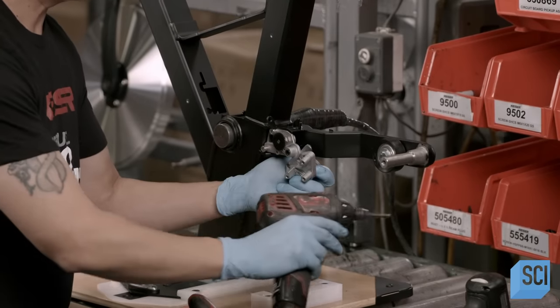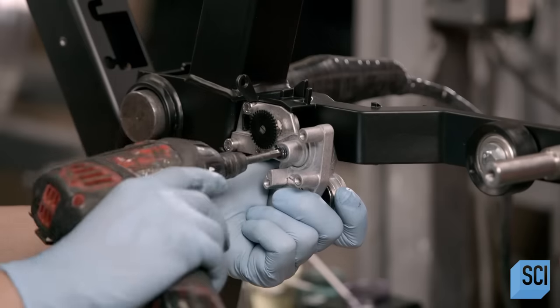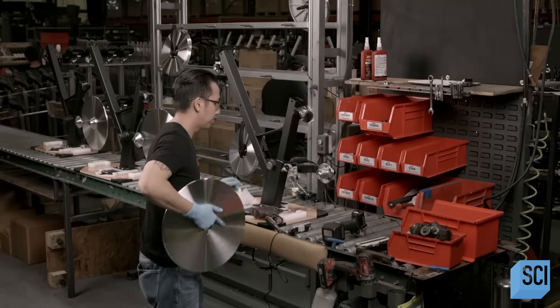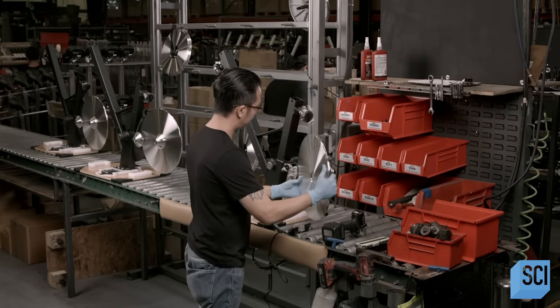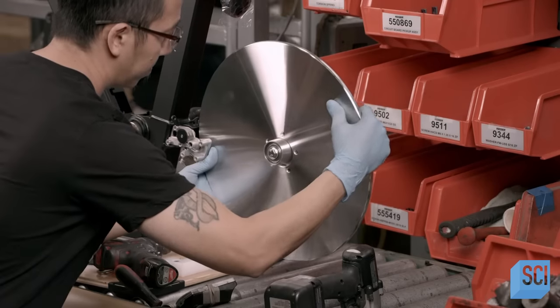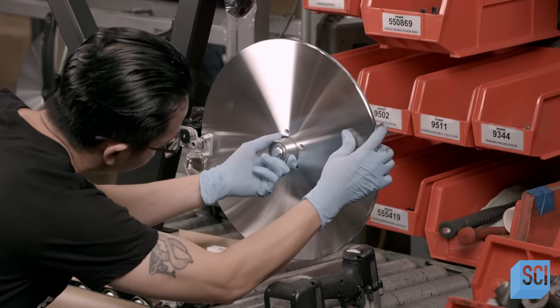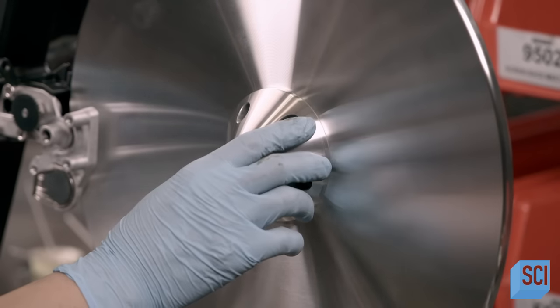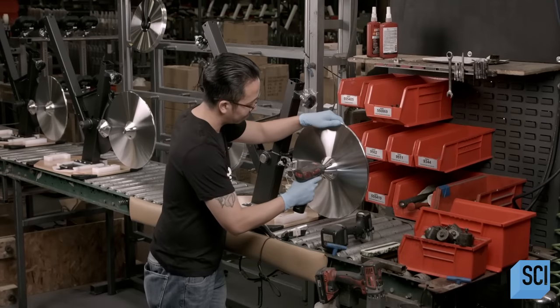The assembler installs the magnetic resistance unit so that it swings from a bracket on the mainframe. This bracket also holds the computer board. He mounts the aluminum flywheel to the axle, sliding it between the magnets and the tension device. He caps the flywheel hub and secures the cap with screws.